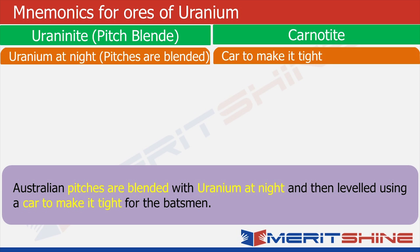Let us try to recall: pitches are blended — pitch blende. They are blended with uranium at night — uraninite. Finally, a car is used to make it tight — carnotite. You see, it is effective.